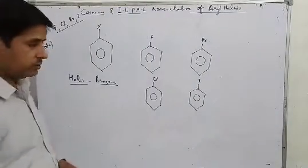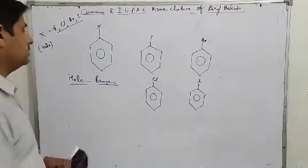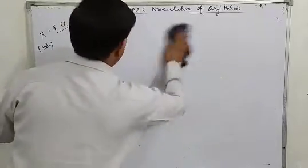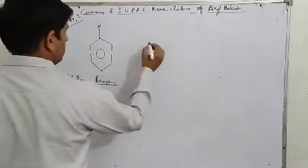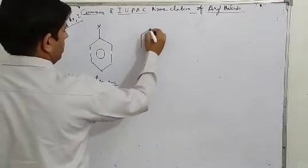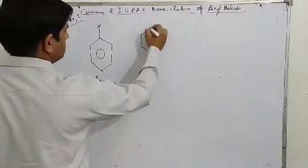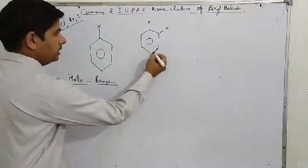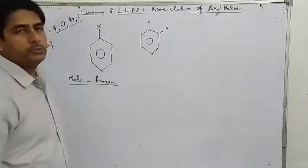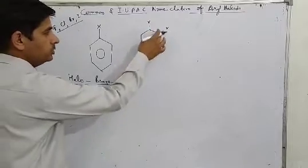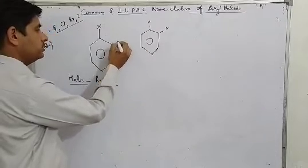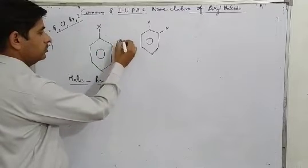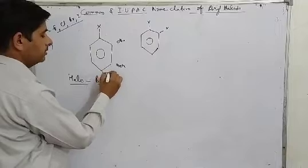Suppose we have more than one halogen — if we have more than one halogen, then we look at their positions in the common system. In this case, when two halogens are present: this position is called ortho, this is meta, and this is para.